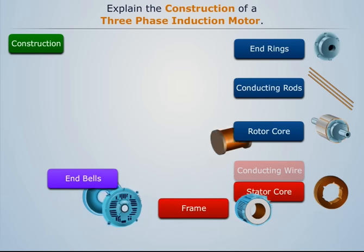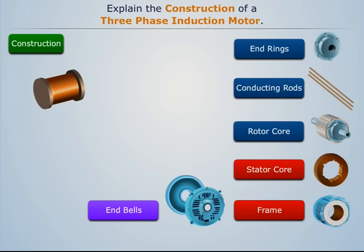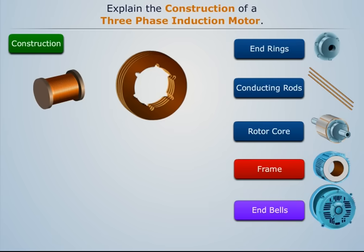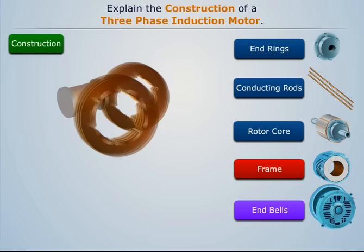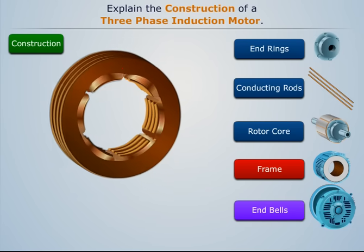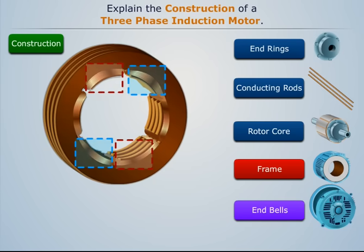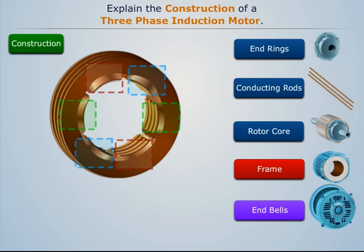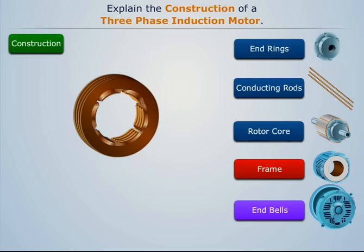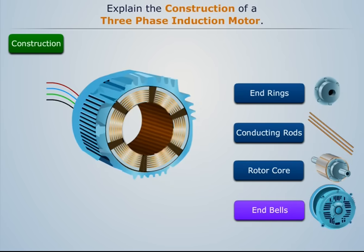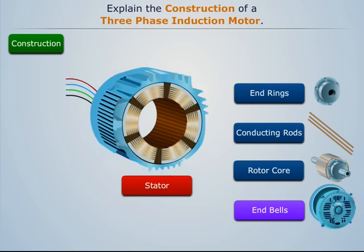First, wind all the conducting wires on the stator core all around it to form three different parts of the coil that behave as three-phase winding. Then attach four outlet wires to these three parts of the coil to connect them to a three-phase supply. Then place this stator core inside the frame to form the stator of the induction motor.